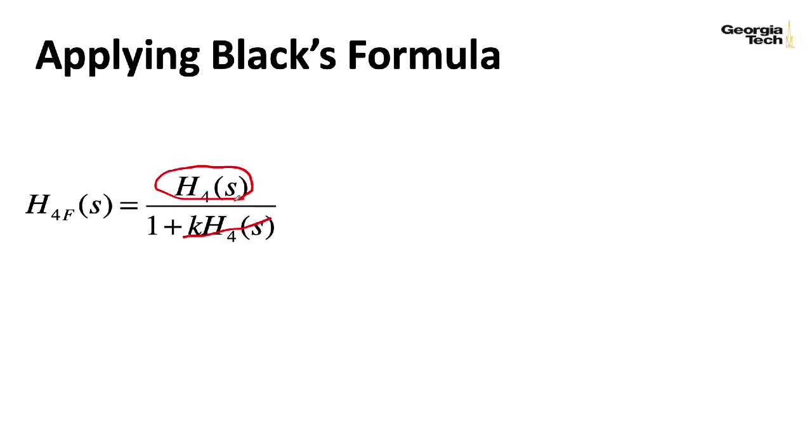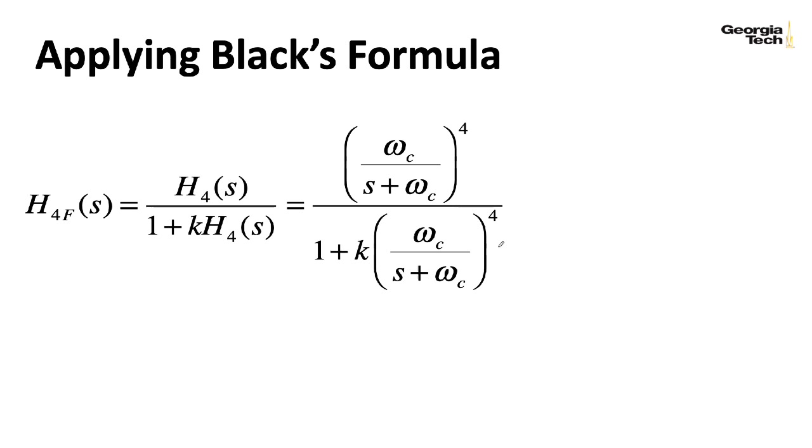All right, so if I plug in the transfer function for the cascade, we get this. And let's clear the fraction by multiplying the numerator and the denominator by s plus omega c to the power of 4. If we do that, we get a little something like this. And this, in its raw form, is fairly tricky to analyze. So let's look at a few special cases.